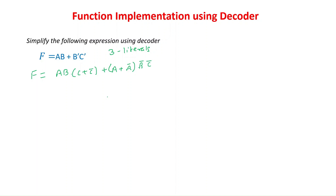We are multiplying (C + C') with AB to generate the function in sum of min terms, because each term must contain every variable. In AB, the variable C is missing, so we multiply by (C + C'), which equals 1. Similarly, in B'C', A is missing, so we multiply by (A + A'). Expanding this function gives: ABC + ABC' + AB'C' + A'B'C'.